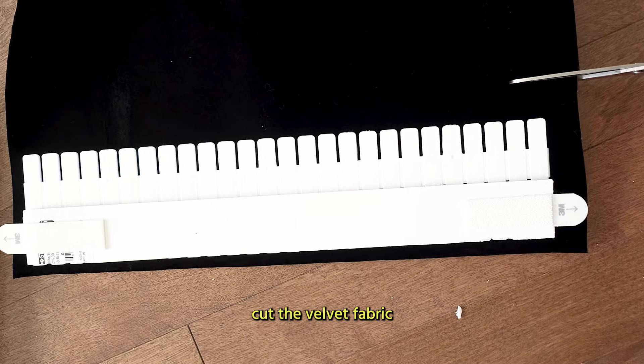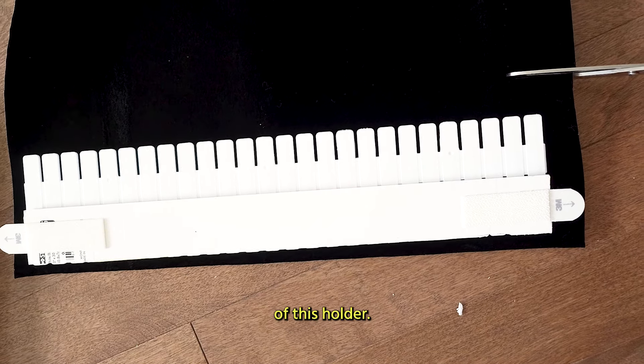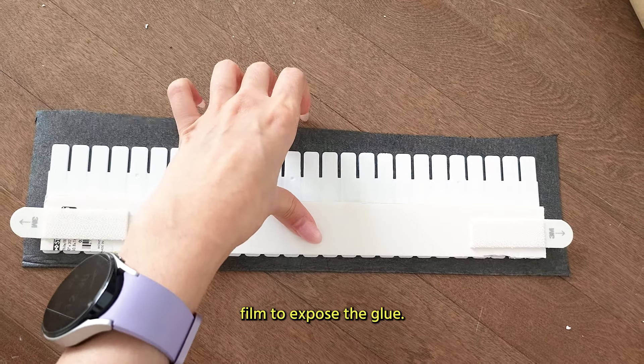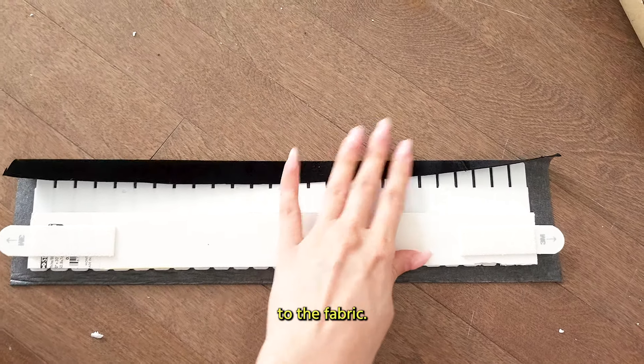Cut the velvet fabric according to the size of this holder. Remove the back film to expose the glue and then you stick on the holder to the fabric.